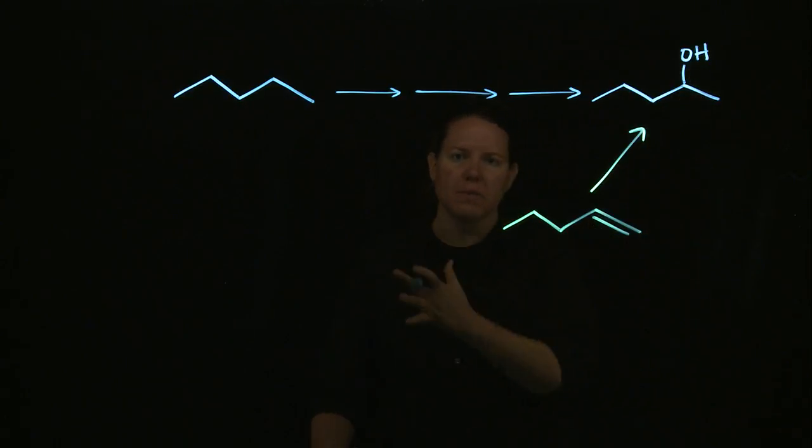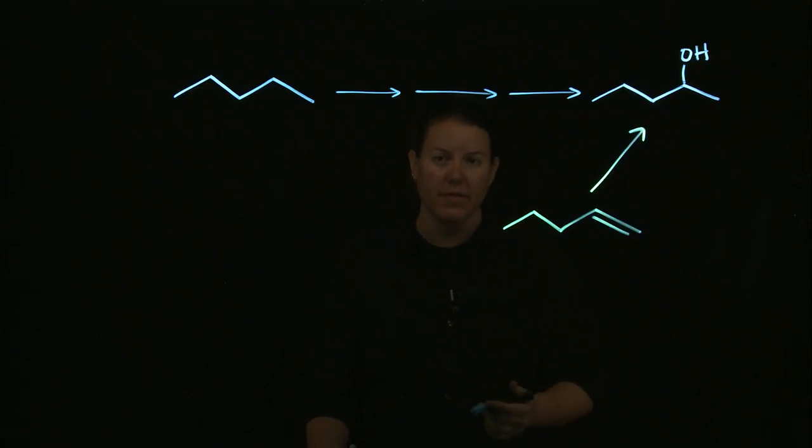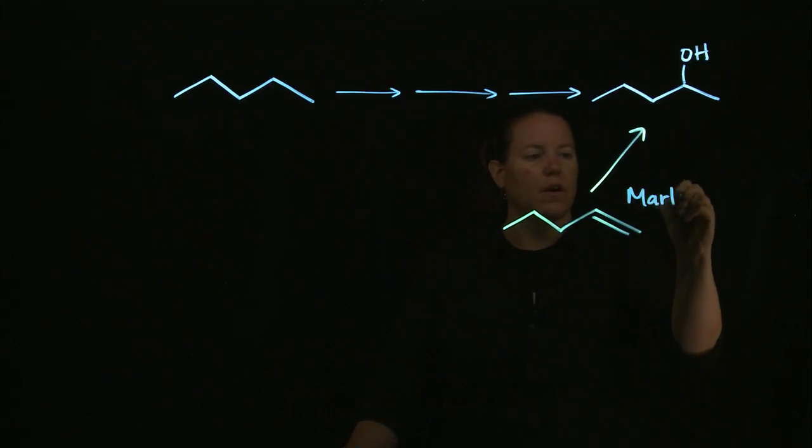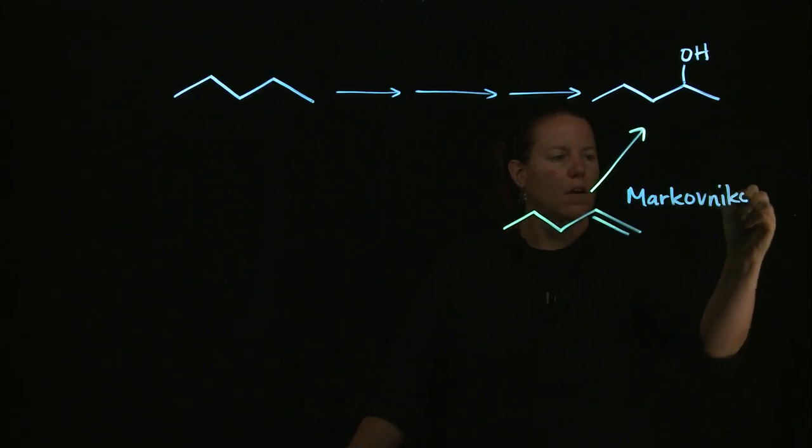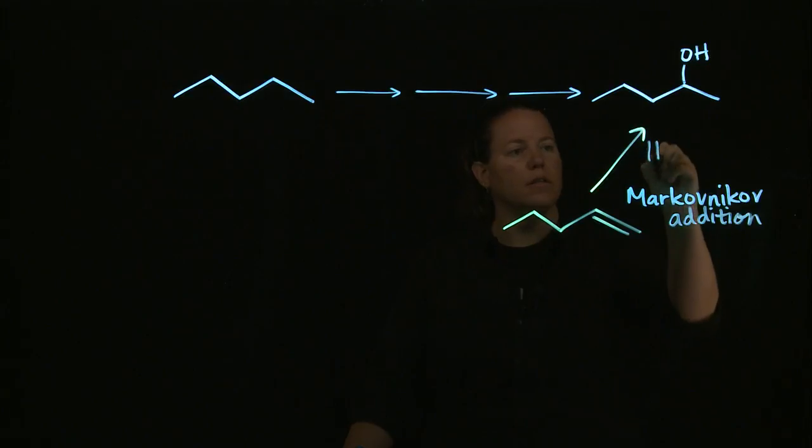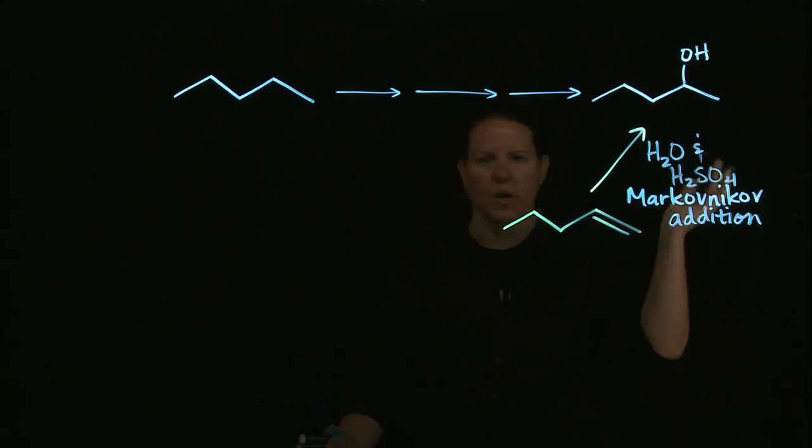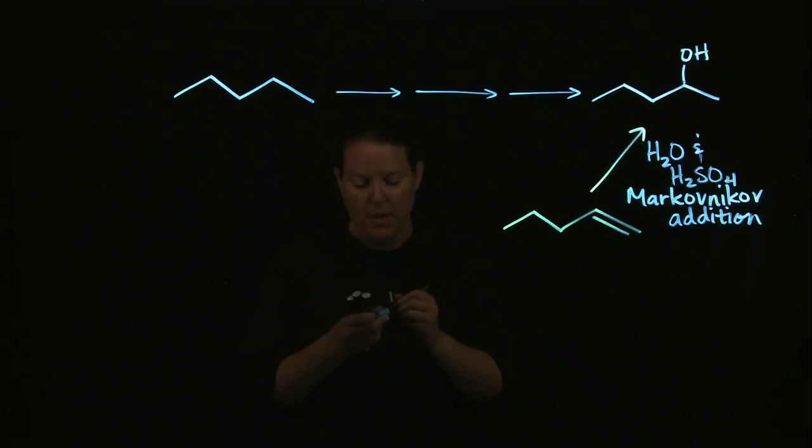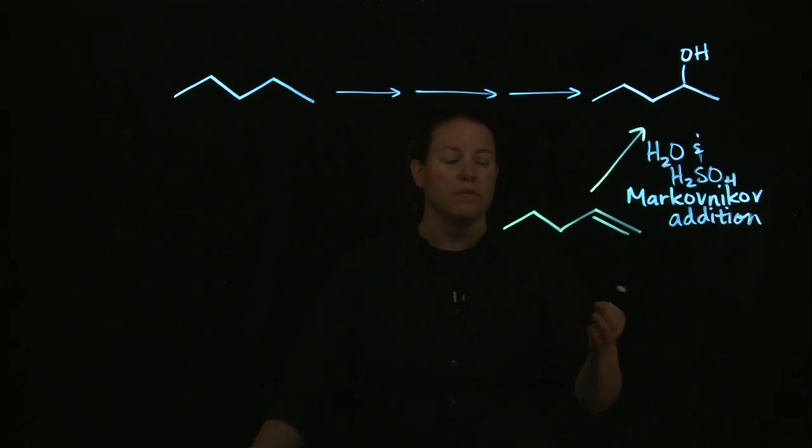Therefore, it's called Markovnikov addition. And the only way I know how to do Markovnikov addition of an alcohol is with H2O and H2SO4 or really any strong acid. Okay, sometimes it's H2O and H3O+. That's exactly the same thing in my mind. So adding water to this along with a little bit of acid catalyst will allow me to go from the double bond, the alkene, to the alcohol. That's awesome.